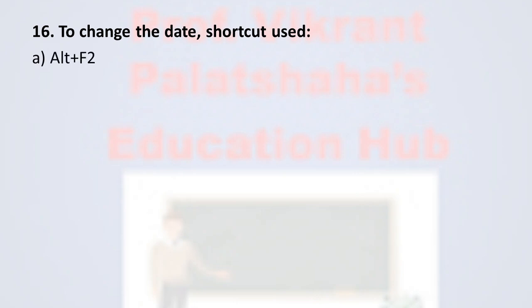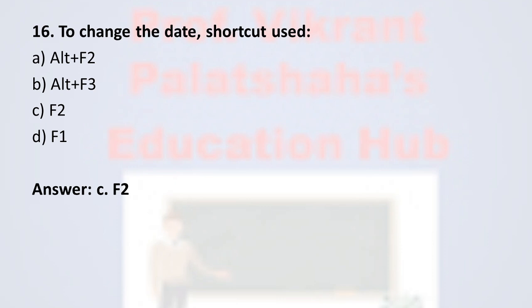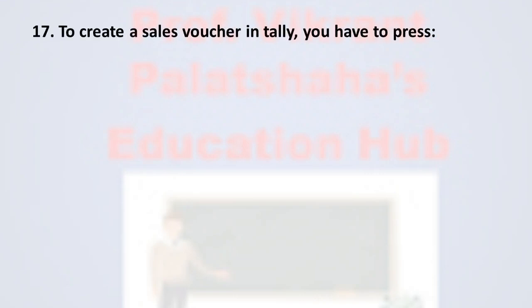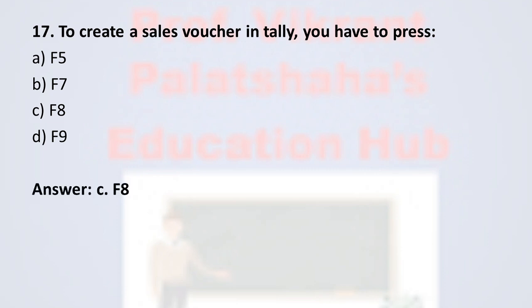Question number sixteen: To change the date, the shortcut key used is — Option A: Alt+F2, Option B: Alt+F3, Option C: F2, Option D: F1. The correct option is Option C, F2. F2 is the shortcut key used to change the date in Tally.